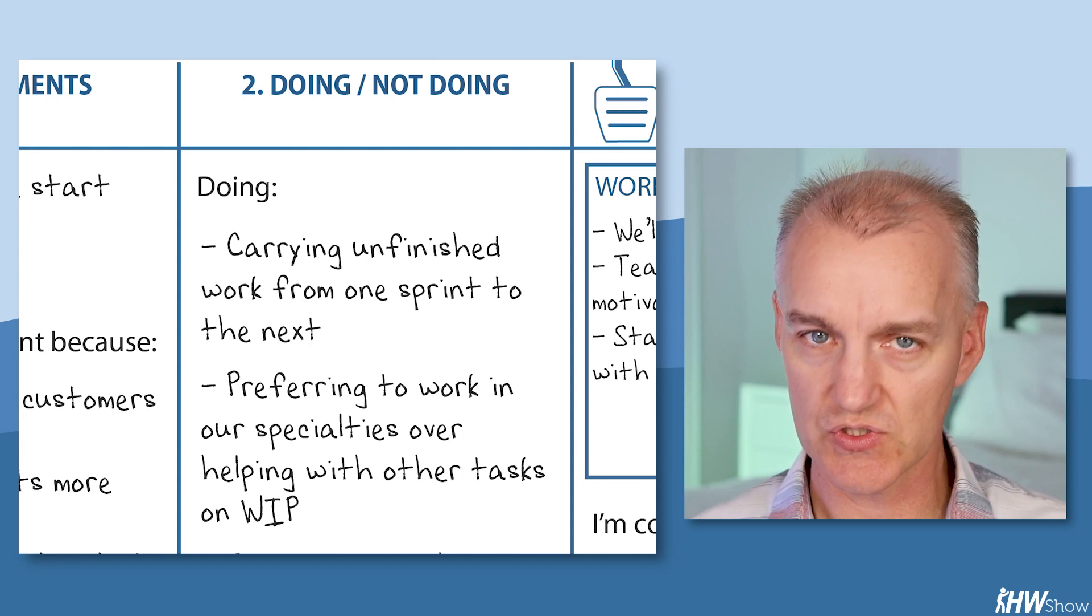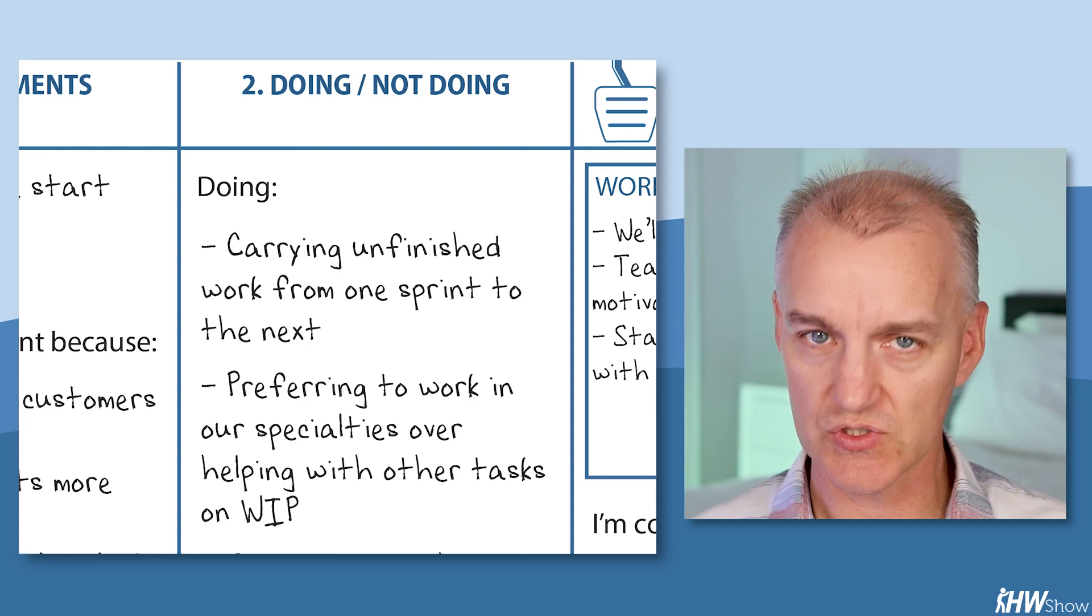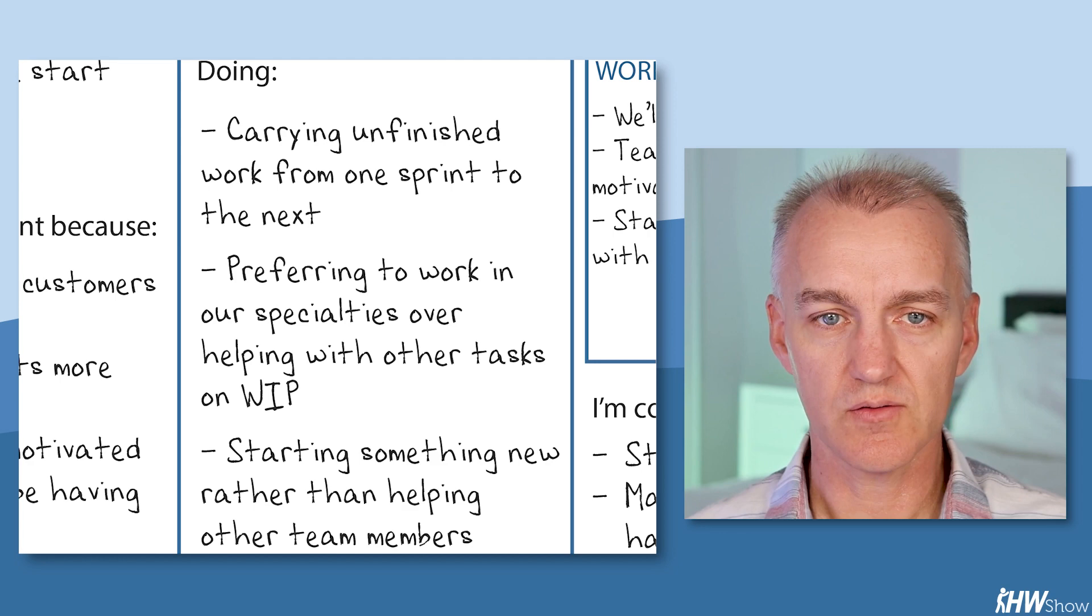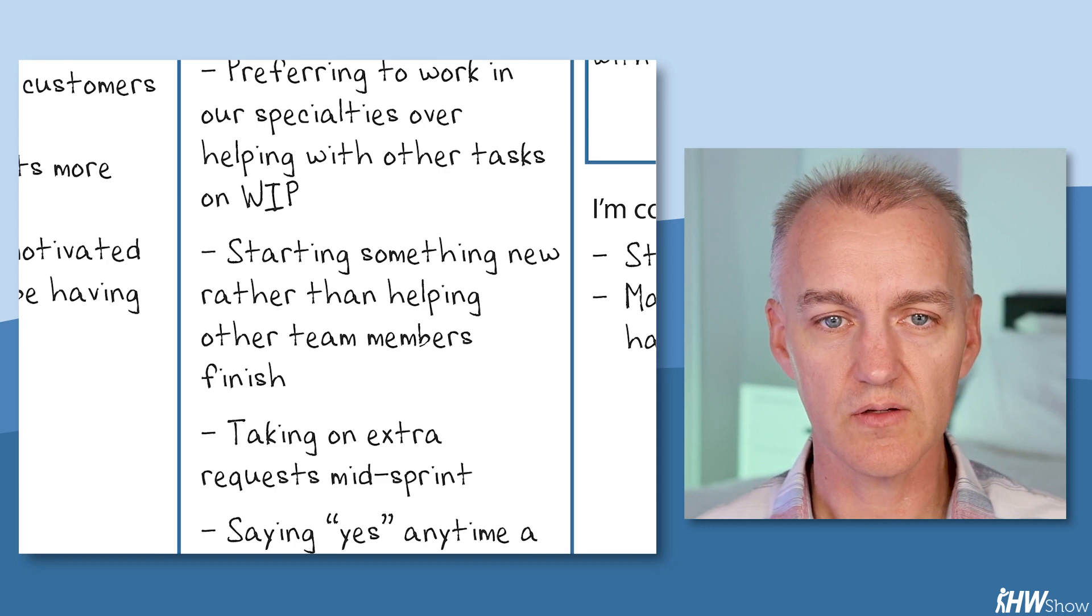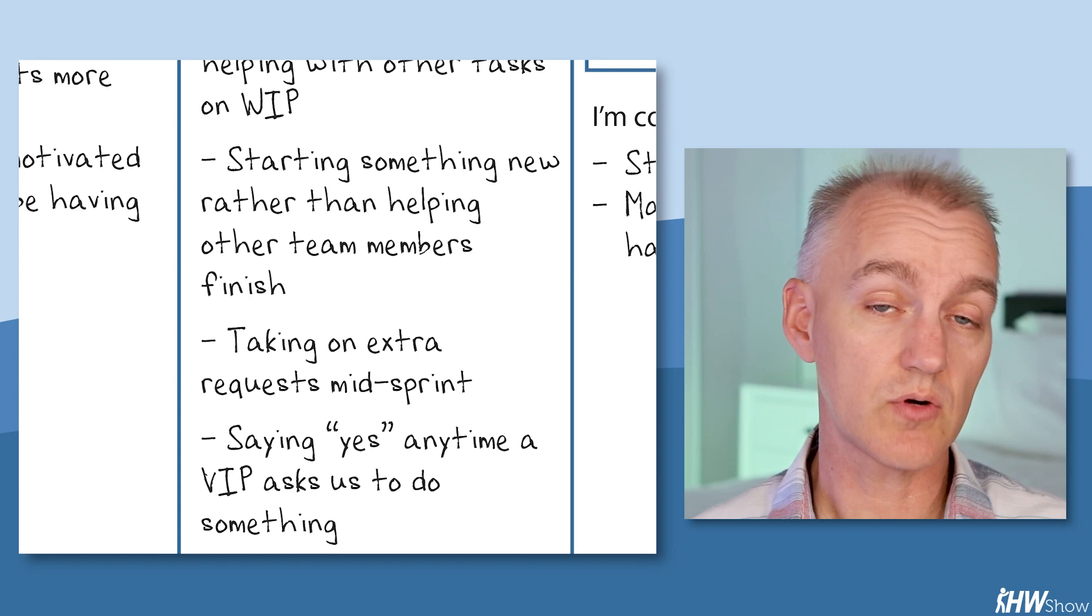Column two, what are we doing instead? How are we screwing up that change goal? Things like we're carrying unfinished work from one sprint to the next. We're preferring to work in our specialties over helping with other tasks that are in progress. We're starting something new rather than helping another team member finish. We're taking on extra requests mid sprint. And we're saying yes, anytime an important stakeholder asks us to do anything.